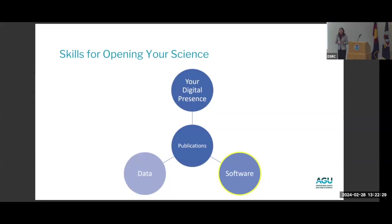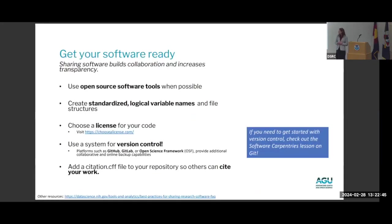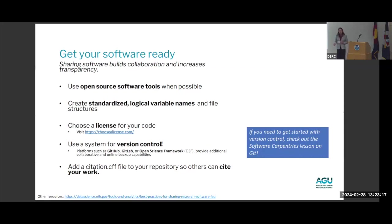Now I'll talk about software — something many people here have strong opinions on. A few general principles to get researchers started, and tips for making sure software you're publishing is actually citable. Many things that apply to data also apply to software: use open source software tools when possible, create standardized and logical file names and structures, communicate this logic to your group, choose a license for your code to enable reuse, and use a system for version control. I've been part of research teams working on models without version control, and it was very chaotic.